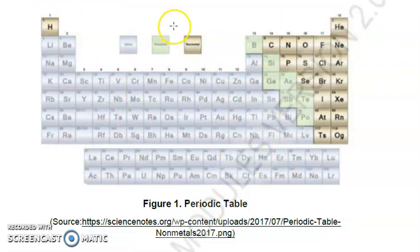In the periodic table of elements, we have the so-called group, we also have the period, then we also have the representative elements and the transition elements. Let's get to know them. This is group one element, group two, group three, four, five, six, seven, eight, nine, ten, eleven, twelve, thirteen, fourteen, fifteen, sixteen, seventeen, eighteen. We have from group one to group eighteen.